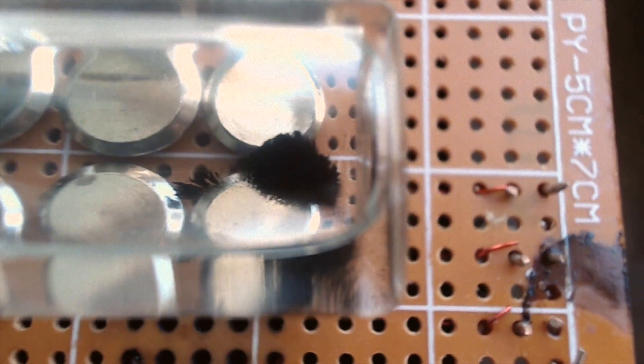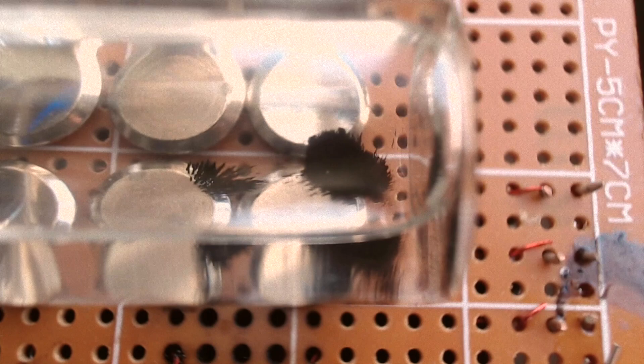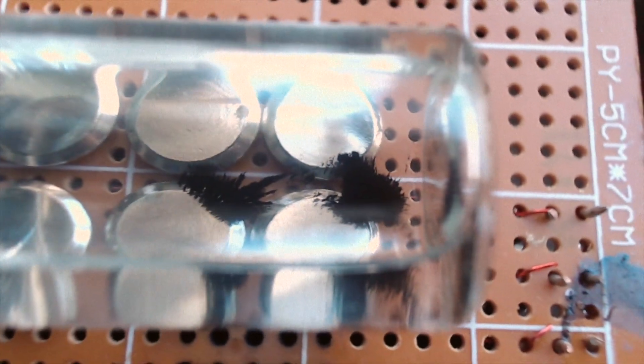Here's the rubbing alcohol again on the ferrobot we made last week. It moves terribly with electromagnets. In fact, I could get it to barely graze the neighboring electromagnet here.